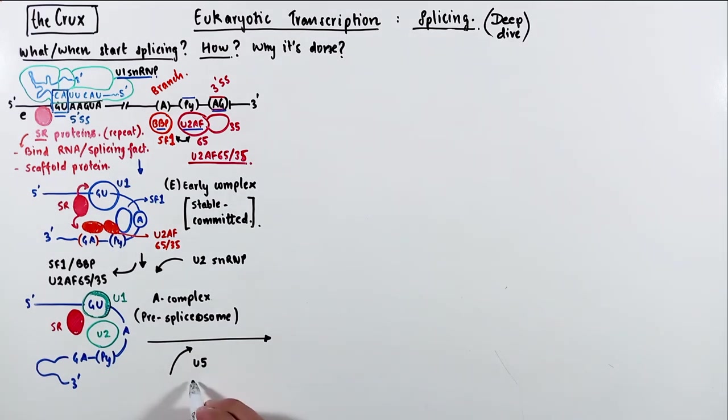Following the A complex formation, U5, U4, and U6 join this party. These three together, as we saw before, are called tri-snRNPs. So we can draw out this new complex again.